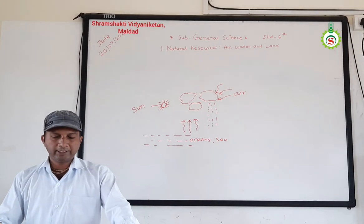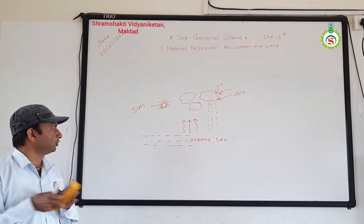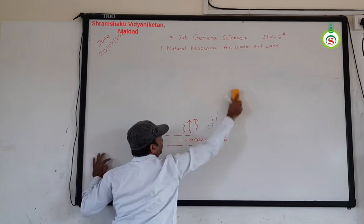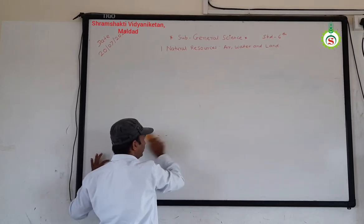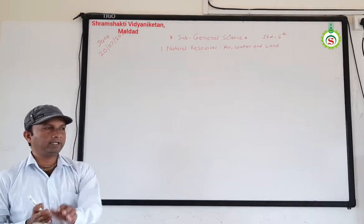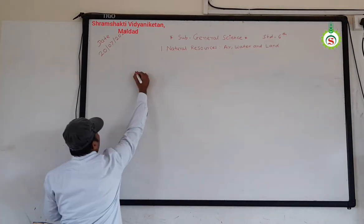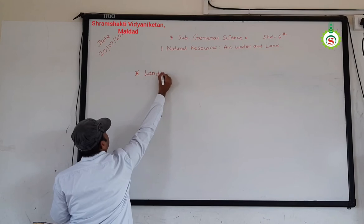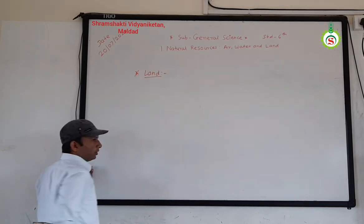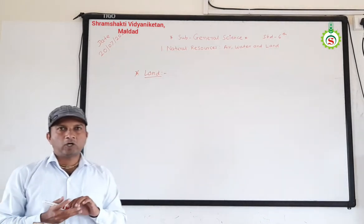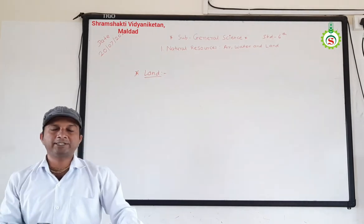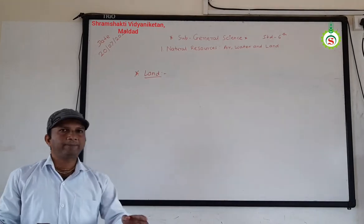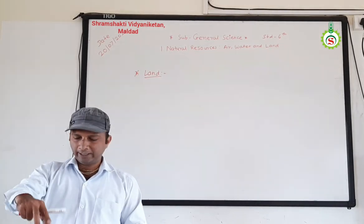The next natural resource is land — the third natural resource. You know how much area of the earth's surface is occupied by land: 29%. So 71% of the surface of the earth is occupied by water, and 29% of the surface of the earth is occupied by land.